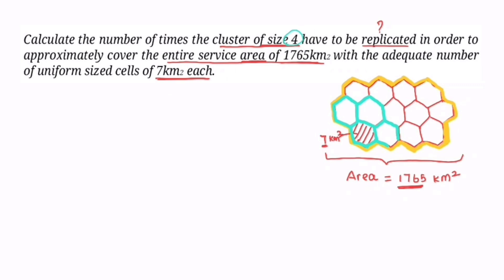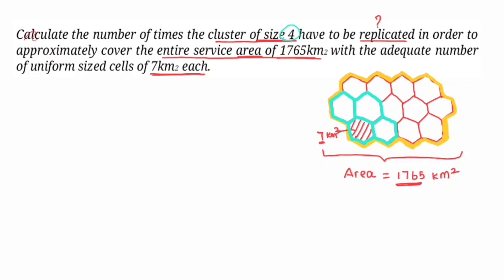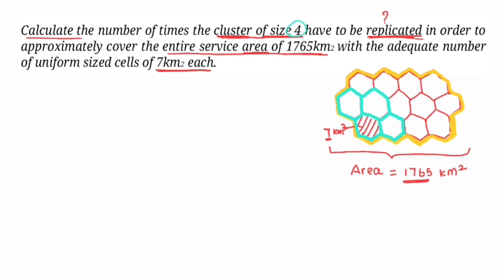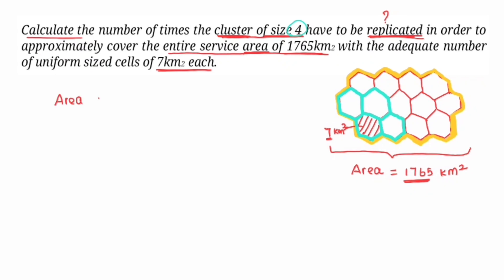Let me show how many cells are in the cluster. To find the number of clusters, we use: total area divided by area of 1 cell gives total number of cells. If you want to calculate the area of your cluster of 4 cells, you multiply the area of 1 cell by 4.